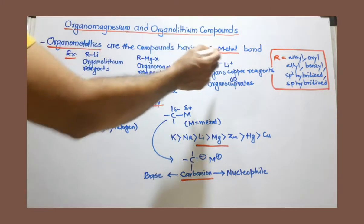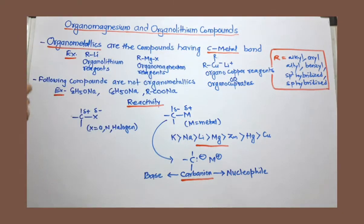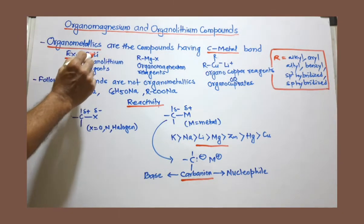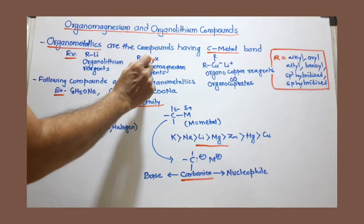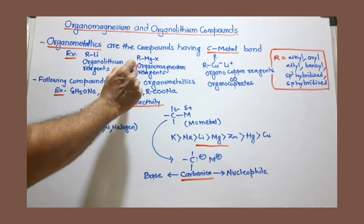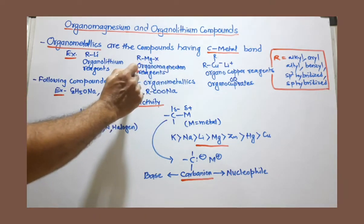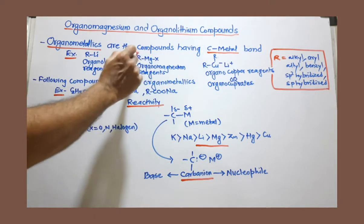we can say organomagnesium and organolithium compounds are organometallic compounds or organometallic reagents. Here, I have given three very popular organometallics. One is R-Li, means organolithium reagents. This is R-Mg-X, which you know very well. This is organomagnesium reagent. This is also called Grignard reagent.